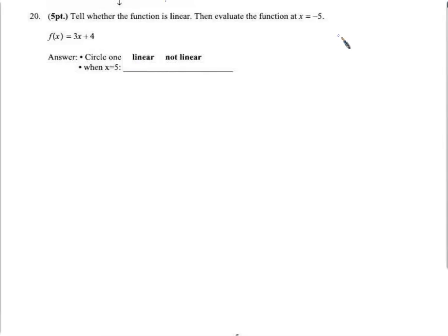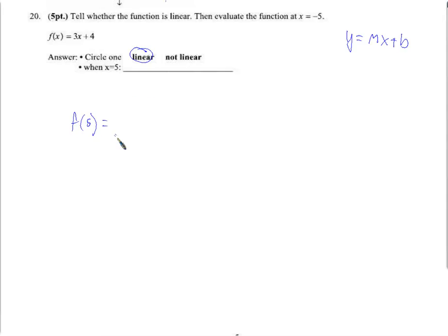Tell whether f(x) = 3x + 4 is linear. Since we can think of f(x) as y, this is y = 3x + 4 — exactly in mx + b form. So yes, it is linear. When x equals 5: f(5) = 3 times 5 plus 4 = 15 plus 4 = 19.